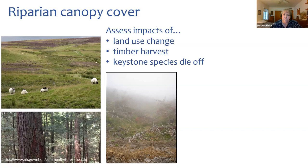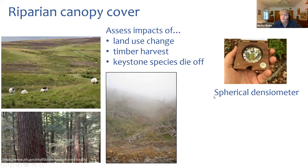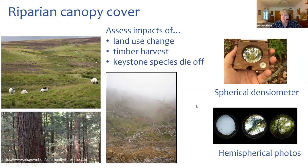To measure canopy cover, it could be as simple as using a spherical densiometer, which gives you a measure of canopy cover by percentage. You could also measure hemispherical photos, which give you better resolution of canopy cover and light availability. And certainly there are lots of sensors that will actually measure the light coming in — so you're actually measuring light rather than estimating it.